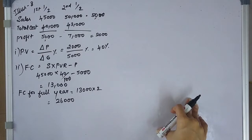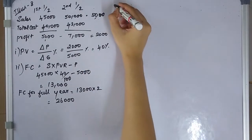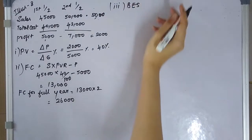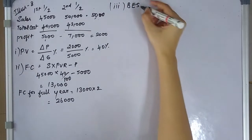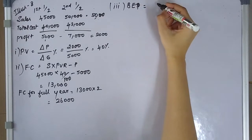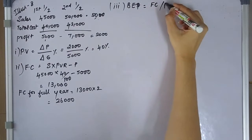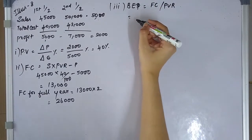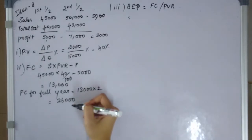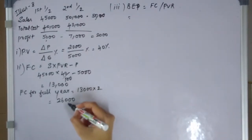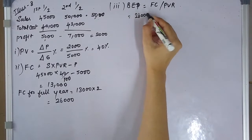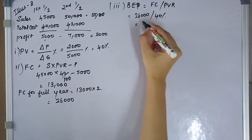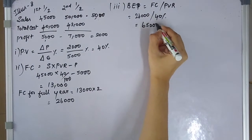Break-even sales. Break-even point equals fixed cost divided by PV ratio. Full year fixed cost is 26,000, divided by PV ratio of 40%, gives break-even sales of 65,000.